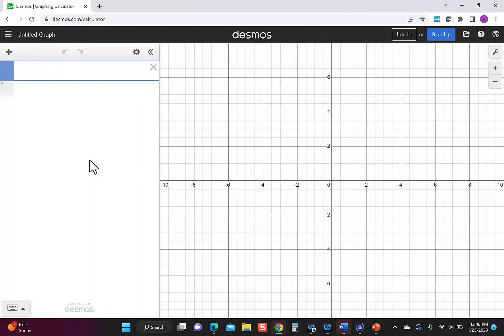So I opened up Desmos and I'm going to type in y = (1/4)(x - 5) + 9. And then I'll go to the second line and type y = (2/3)(x + 8) - 3.